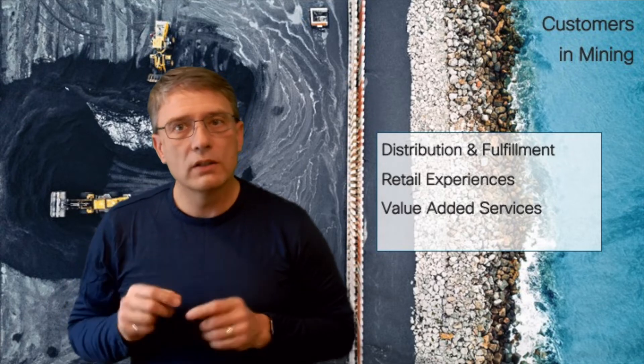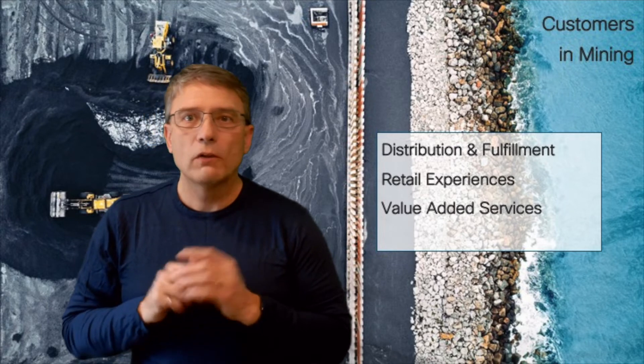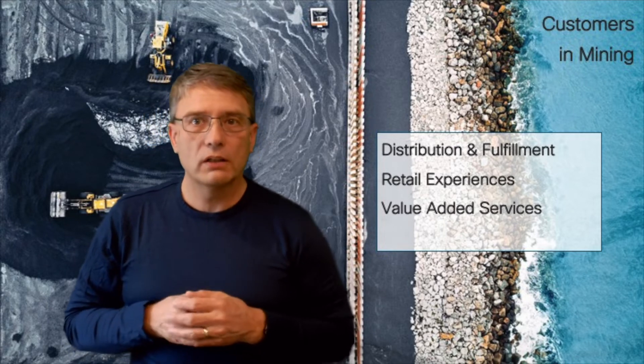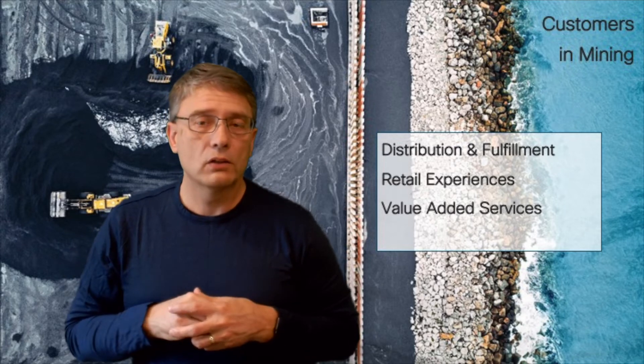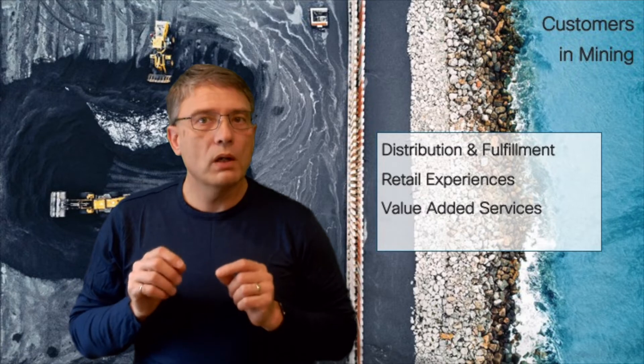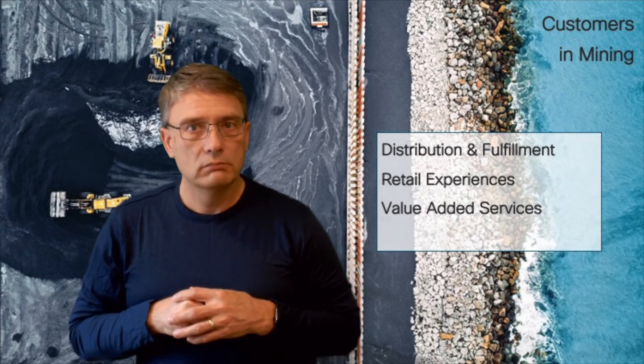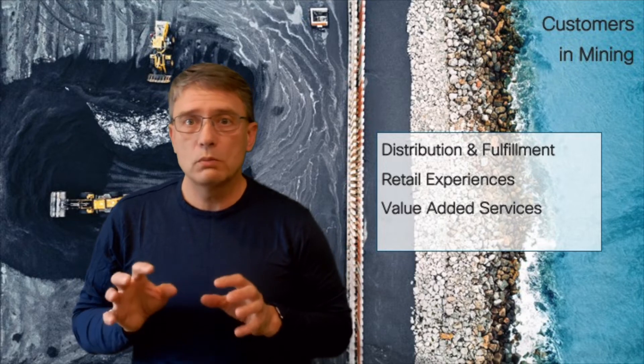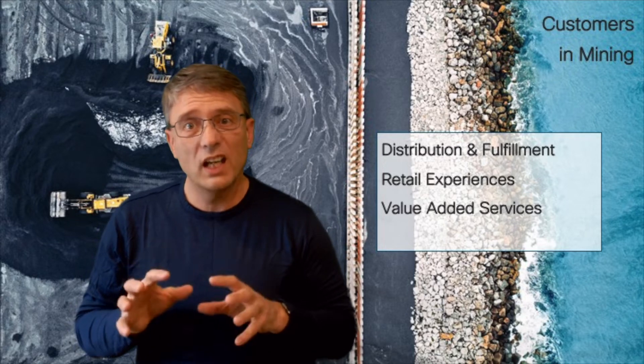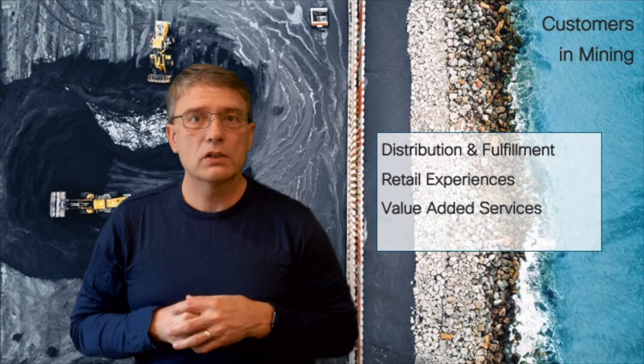The second way is through a retail relationship. For a small number of large vertically integrated companies like De Beers in the diamond industry and Nutrient in the agriculture industry, only one part of their large operation is mining. At the other end of the supply chain is a retail experience where consumers or wholesale customers are engaged with a full marketing experience.